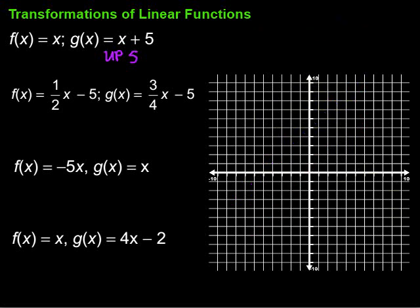For this next example, we have two equations again. I'm going to start graphing the first one by starting at the y-intercept, which is negative 5. The slope is 1 over 2 — rise 1 and run 2. Going up 1 over 2, or down 1 over 2 as many times as needed to get all those points.